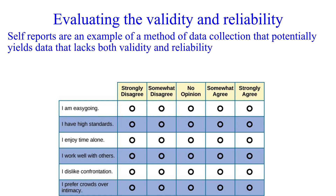You need to make two separate points here. State that the self-report may lack validity because it's not measuring what it's supposed to measure. Outside variables such as placebo effects, experimenter effects, and non-standardized procedures can all compromise validity. Then go into detail about how the results may be inconsistent, therefore lacking reliability.